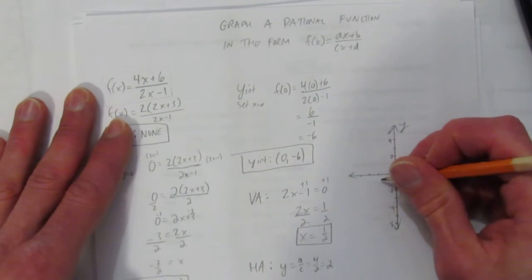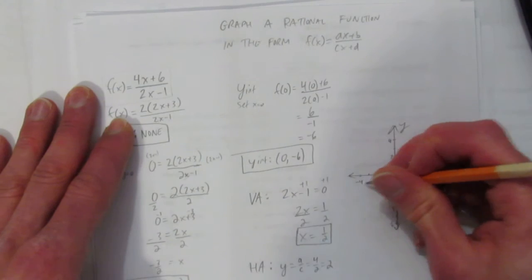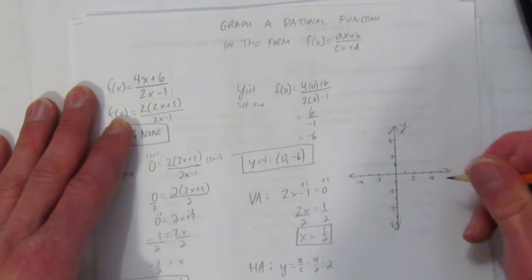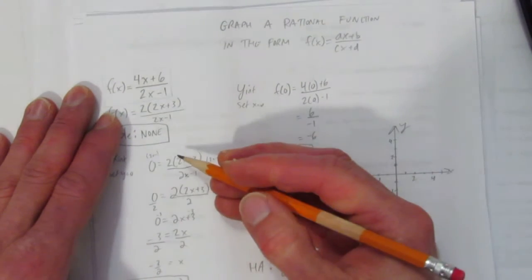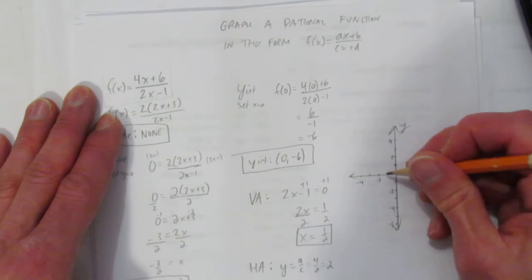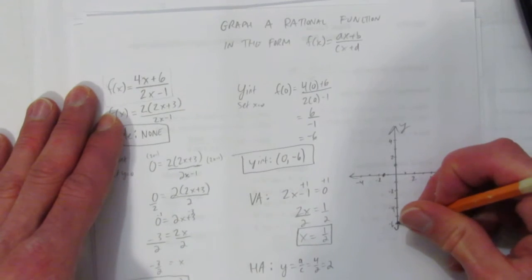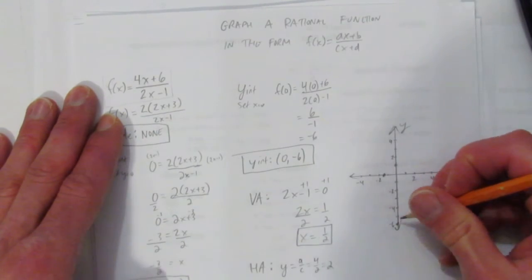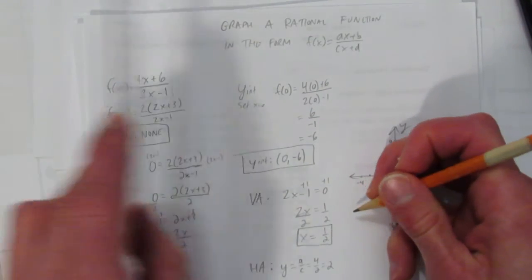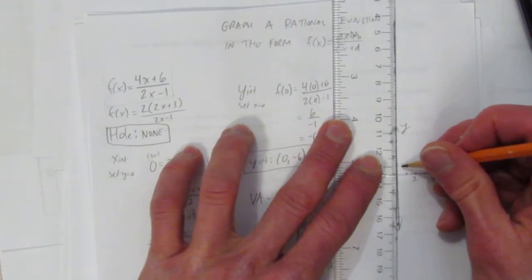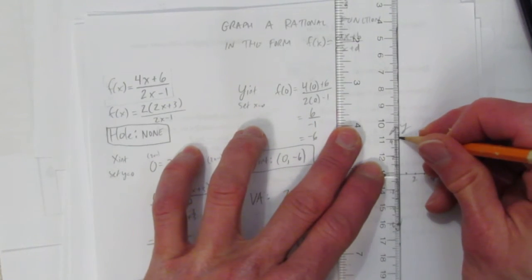I'm going to keep the same scale on the x-axis. Put all my stuff, x-intercept at -1.5. That's an x-intercept right here. Y-intercept at -6. That's down here. Now, I need to put a vertical asymptote at x=0.5. Vertical asymptote, halfway to 1. Put a dashed line.